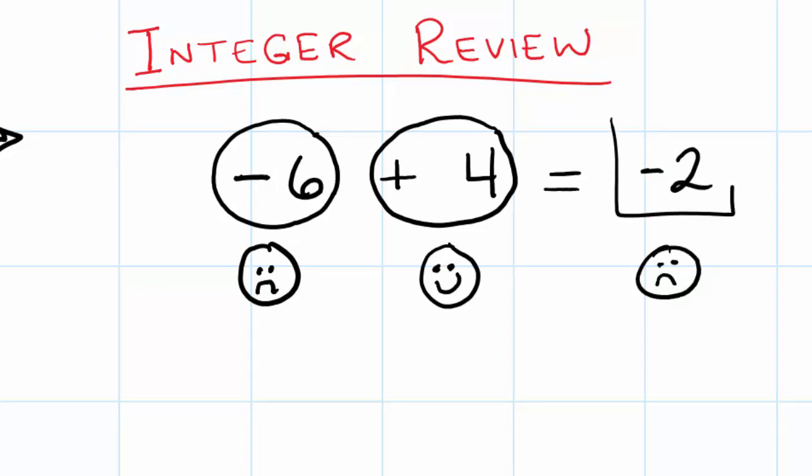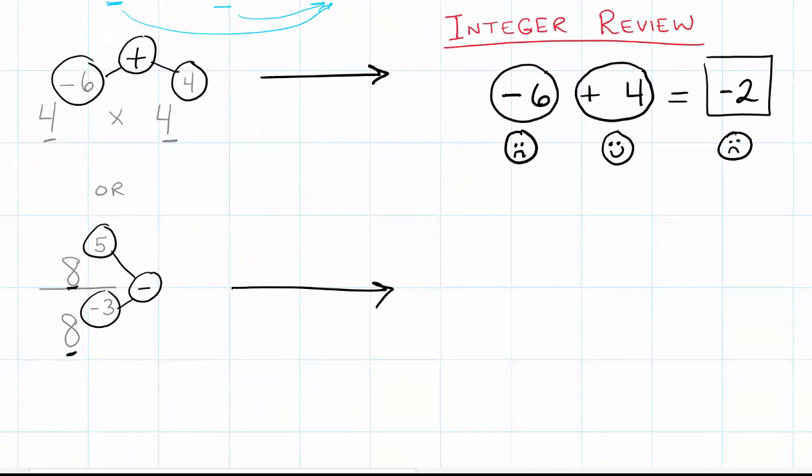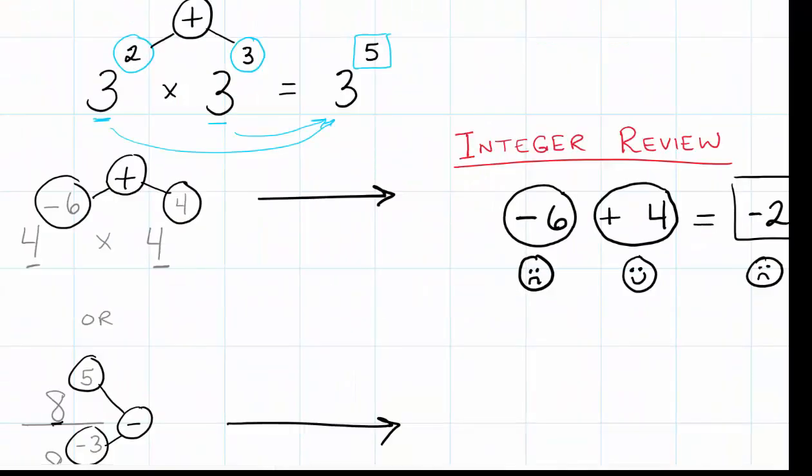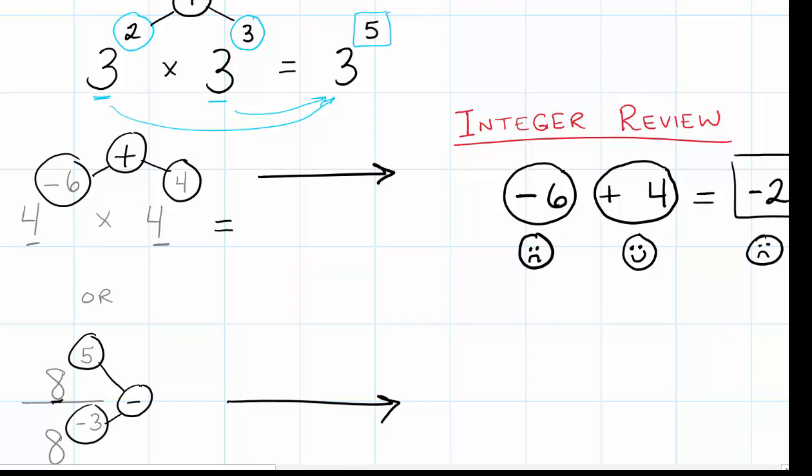And so that gives us our exponent that we need in order to simplify in exponential form. And so 4 to the negative 6 times 4 to the 4th is really 4 to the negative 2nd power.